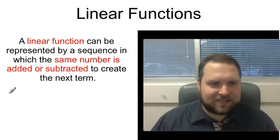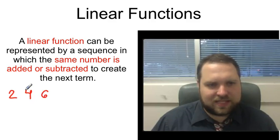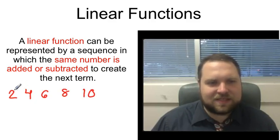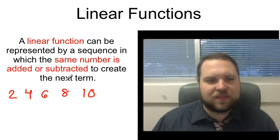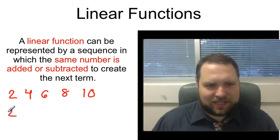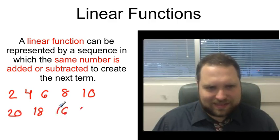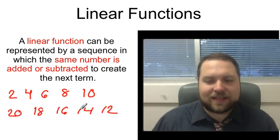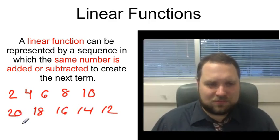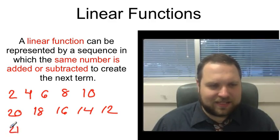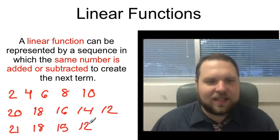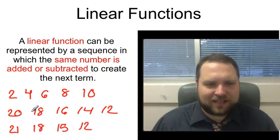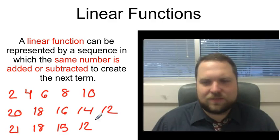For instance, I might have a sequence like 2, 4, 6, 8, 10 — every single time, all I do is add 2. I added the same number each time; that's a linear function. It doesn't have to be addition. I could have 20, 18, 16, 14, 12 — subtracting the same number each time. And it doesn't have to be 2; it can be some odd number. I can say 21 minus 3 is 18, minus 3 is 15, minus 3 is 12. So as long as you're adding or subtracting the same number each time, all three of these are linear functions.